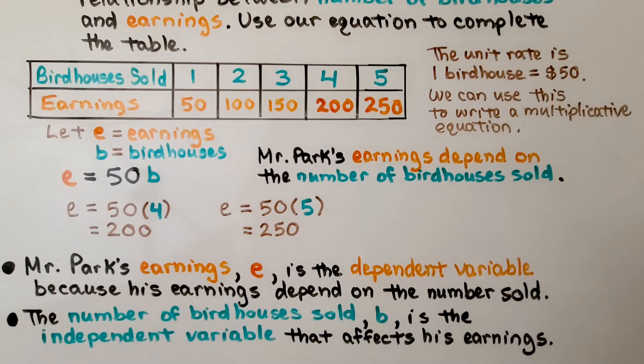Mr. Park's earnings, E, is the dependent variable because his earnings depend on the number sold. The number of birdhouses sold, B, is the independent variable that affects his earnings.